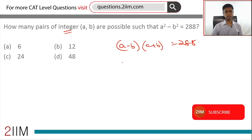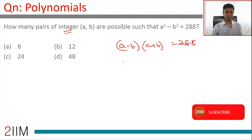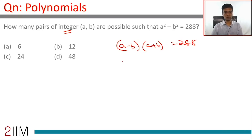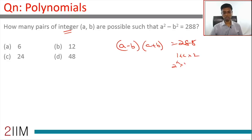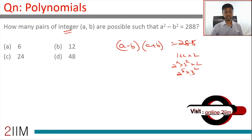We need to break 288 as a product of two numbers. Let's first find answers for natural numbers and extrapolate to integers later. So 288 should be written as a product of two numbers. We need to factorize 288: it is 2⁵ × 3², which has 18 factors. There are nine different ways of writing it as a product of two numbers.